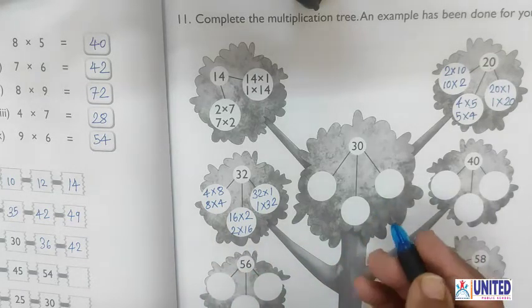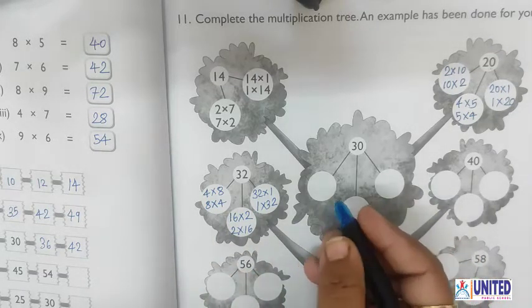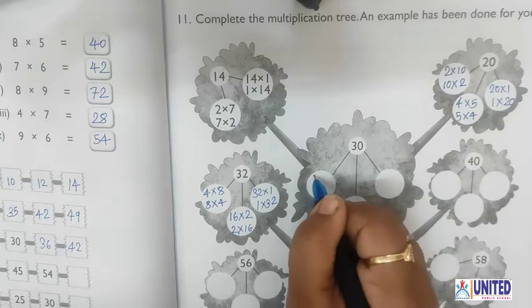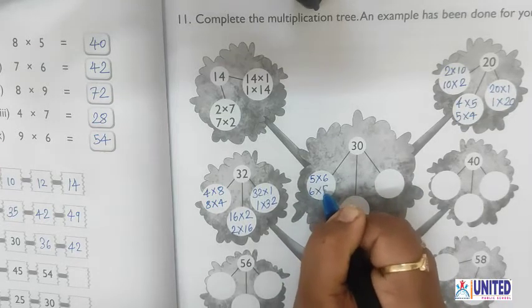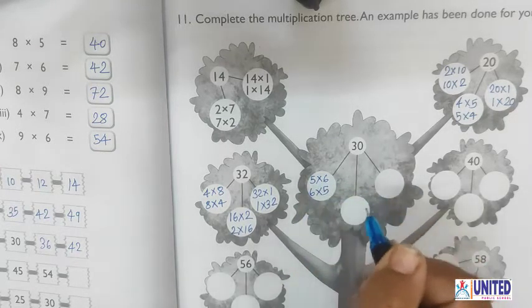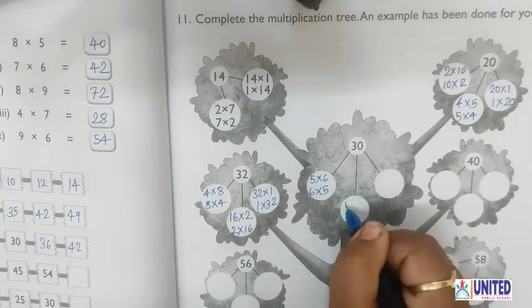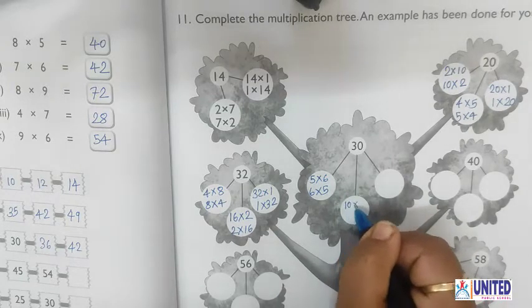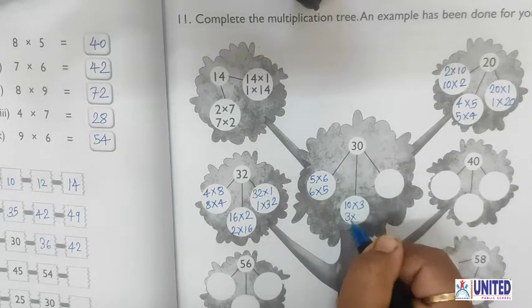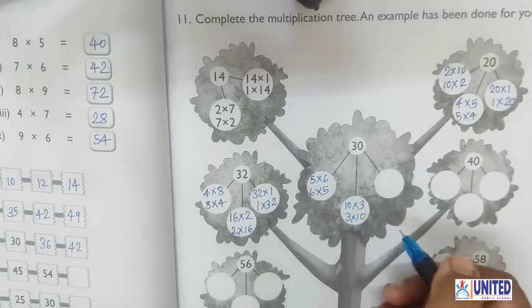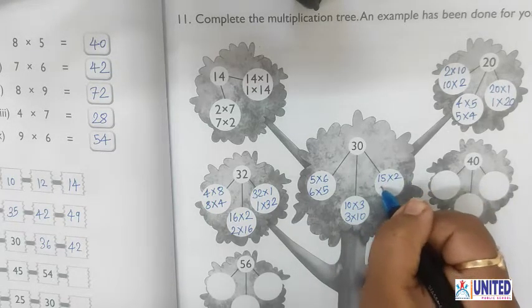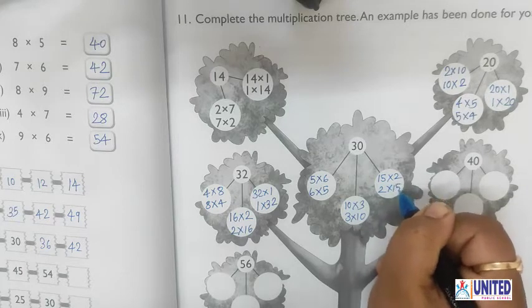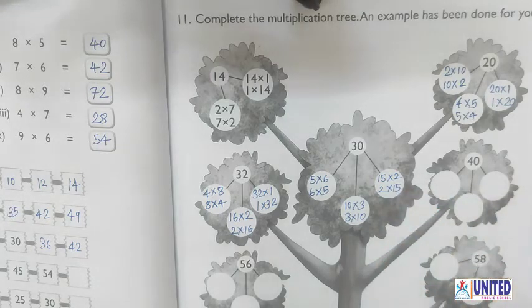For the number 30: 5×6=30 or 6×5=30. Also 10×3=30, 3×10=30, 15×2=30, and 2×15=30.